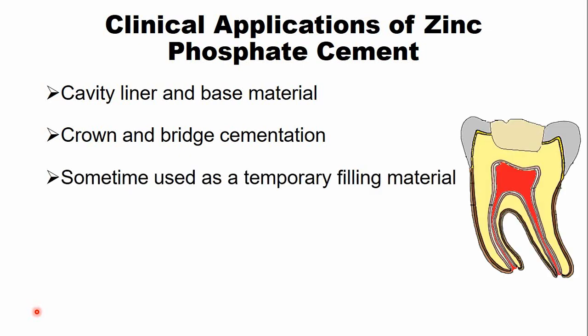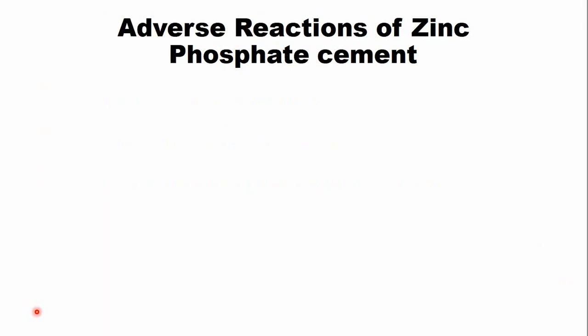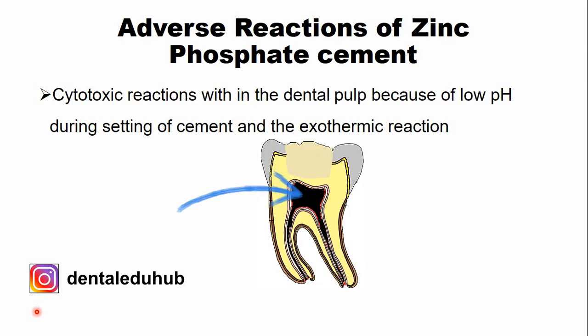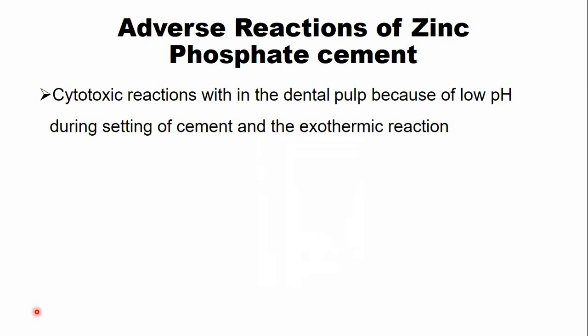This cement is also used as a temporary filling material. The adverse reactions associated with zinc phosphate cement are only local. For example, cytotoxic reactions within the dental pulp may lead to pulp necrosis, because the pH is initially low during setting and there is an exothermic reaction, which can sometimes lead to pulp necrosis.